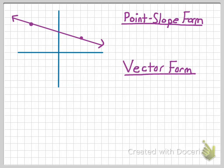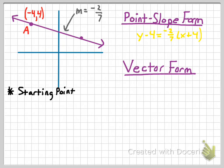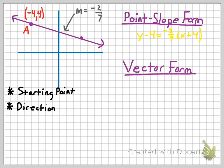Let me go ahead and write the point-slope form of this equation. You can see I've written the coordinates for point A and the slope of the line on the graph. The equation of that line is y minus 4 equals negative 2/7 times x plus 4. Again, there are two key things needed: a starting point — we happen to start at point A, but could have started at point B or any other point — and the direction the line goes from that starting point, which in point-slope form is accomplished by the slope.